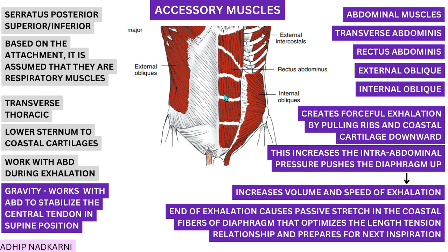The major function of your abdominal muscles as an accessory muscle is to create exhalation. They are attached to the lower ribs and go down to attach to the pelvis. When they contract, these ribs are pulled downward and the abdomen contracts, which increases intra-abdominal pressure. As intra-abdominal pressure increases, it pushes the diaphragm up, and this pushes all the air in your lungs out. This creates forceful exhalation by pulling the ribs and costal cartilages down, increasing intra-abdominal pressure, and pushing the diaphragm up.